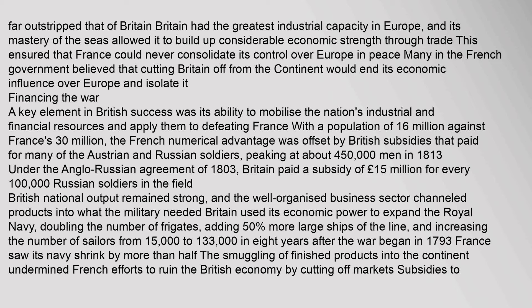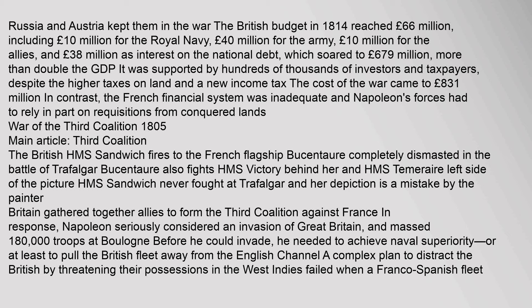Russia and Austria were kept in the war by British subsidies. The British budget in 1814 reached £66 million, including £10 million for the Royal Navy, £40 million for the army, £10 million for the Allies, and £38 million as interest on the national debt, which soared to £679 million — more than double the GDP. The total cost of the war came to £831 million. In contrast, the French financial system was inadequate and Napoleon's forces had to rely in part on requisitions from conquered lands.